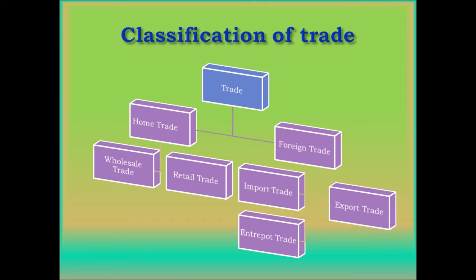According to the geographical location of the buyers and sellers, trade can be divided into two: home trade and foreign trade. Home trade is further divided into wholesale trade and retail trade. Foreign trade is divided into import trade, export trade, and entrepot trade.